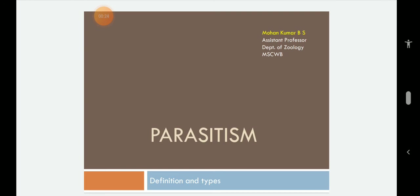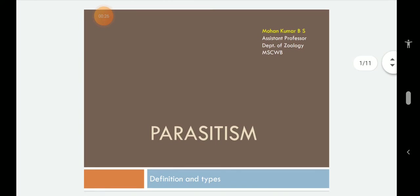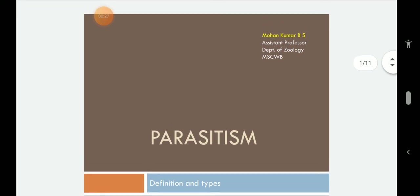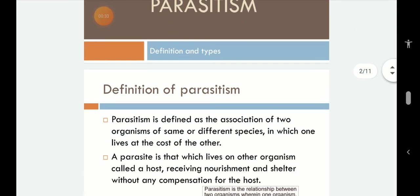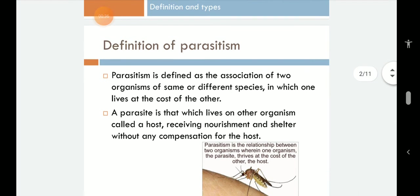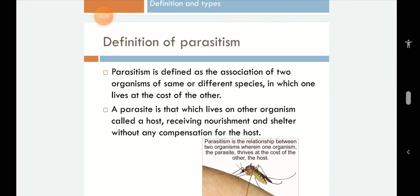Parasitology, the first chapter is about definition and types of parasitism. What is parasitism? Parasitism is defined as the association of two organisms of same or different species in which one lives at the cost of the other. It is basically taking the benefit without giving anything.